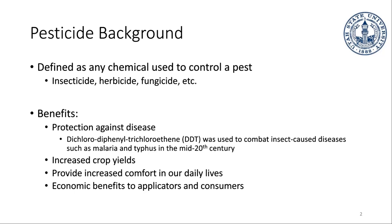In agriculture, pesticides are going to help us improve crop yield — we're going to be producing more food if we don't have as many pests killing those plants. We use them in our homes to protect against different insects and things that would reduce the quality of our lives. And there's also an economic benefit: increased crop yield gives us more food and ultimately helps reduce the price for the consumer.